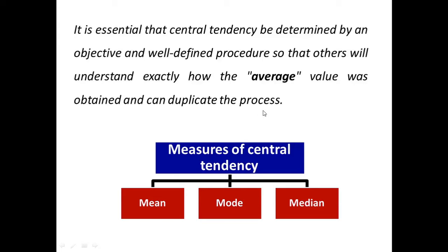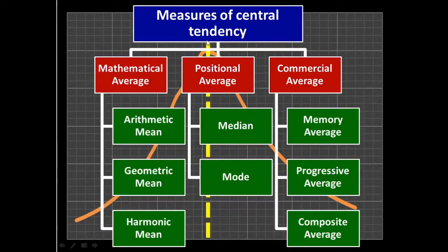Unfortunately, no single procedure always produces a good representative value. Therefore, researchers have developed three commonly used techniques for measuring central tendency: mean, median, and mode. However, if we broadly categorize the overall measures of central tendency, we can group them into three categories. The first is mathematical average, which includes arithmetic mean, geometric mean, and harmonic mean. The second is positional average, which includes median and mode. The third is commercial average, which includes moving average, progressive average, and composite average.